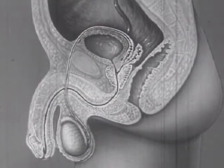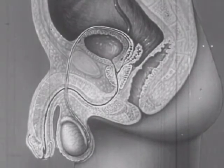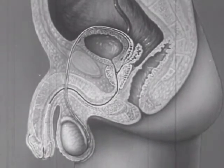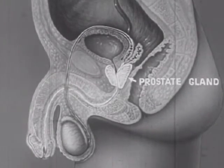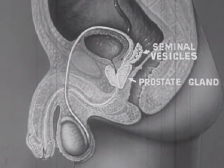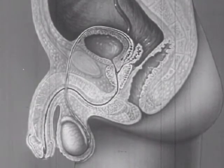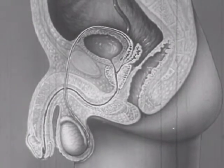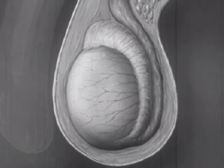The external male reproductive organs, as shown in this drawing, consist of the penis and the scrotum. The scrotum contains the testicles. In a section view we can see that the penis and testicles are connected by a long tube — this is the urethral canal. It extends from the penis back past the prostate gland and seminal vesicles to join the tube leading from the testicles. In this same diagram we can also see the bladder, which empties into the urethral canal. The testicles in men correspond to the ovaries in women because they both are glands in which the reproductive elements are formed.